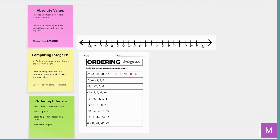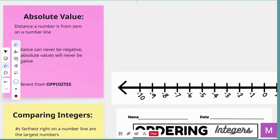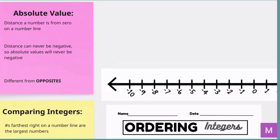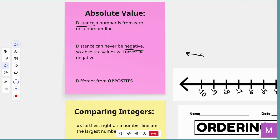So we are going to begin by reviewing absolute value. Remember, the definition for absolute value is the distance that the number is from zero on a number line. The biggest thing to remember is that with it being a distance, distance can never be negative. You are either traveling in a direction or you are standing still. It doesn't matter if you are traveling left — we're not going to say that because we're walking left, we are going negative. That's not necessarily true.